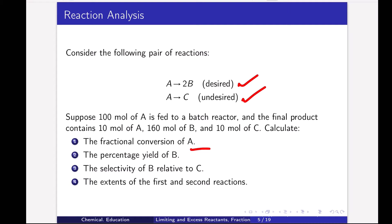If you go to my other video, I show you how to calculate extent of reaction for a single reaction. Now here a pair of reactions is given, so how do you find out the extent of the first reaction and the second reaction?